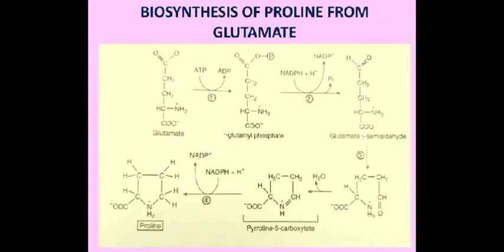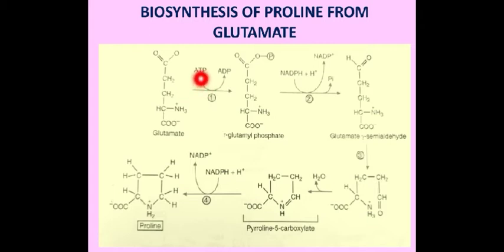Biosynthesis of proline from glutamate. Glutamate formed in the previous reaction is converted to proline. First, glutamate is phosphorylated at the gamma carbon by the enzyme glutamate kinase, utilizing one molecule of ATP. As a result, gamma-glutamyl phosphate is synthesized.